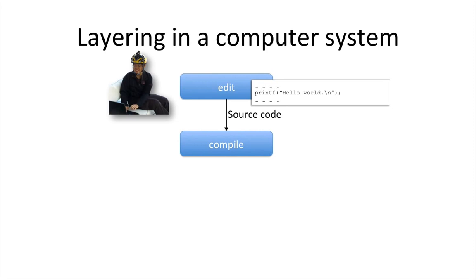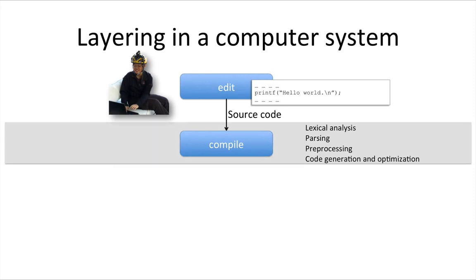The compiler is a self-contained functional component that is responsible for several tasks, such as lexical analysis, parsing our code, preprocessing declarations, and code generation optimization. The compiler generates object code, which it then passes to the linker.